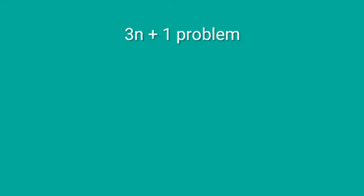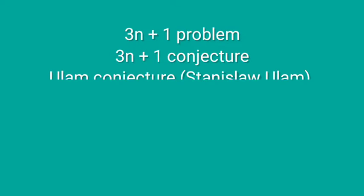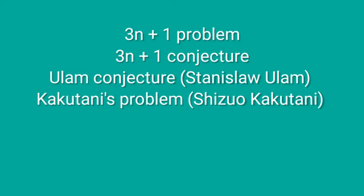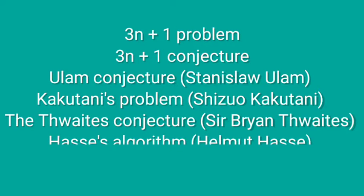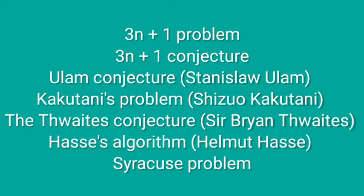It is also known as the 3n plus 1 problem, the 3n plus 1 conjecture, the Ulam conjecture after Stanislaw Ulam, Kakutani's problem after Shizuo Kakutani, the Thwaites conjecture after Sir Brian Thwaites, Hasse's algorithm after Helmut Hasse, or the Syracuse problem.